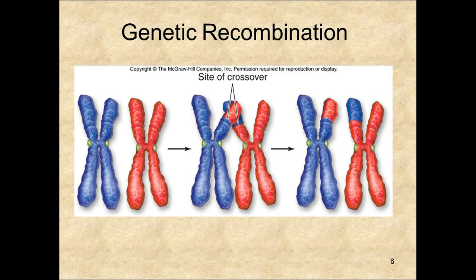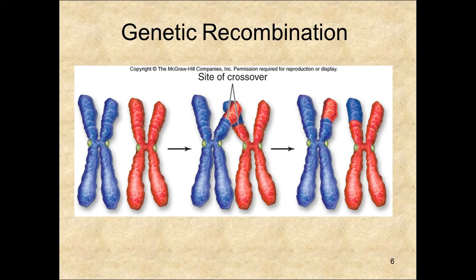Genetic recombination, also called crossing over, is the exchange of genetic information between these homologous pairs. Crossing over occurs between non-sister chromatids, meaning the exchange goes between mom's chromosome and dad's chromosome. If you were exchanging between sister chromatids, you'd be exchanging mom's information with mom's information. Alleles that were on separate homologs can now be found on the same homolog, meaning that dad's gene for eye color will now be found on mom's chromosome. The sites where crossing over occurs are called the chiasmata. These chiasmata will stay attached all the way until anaphase I.